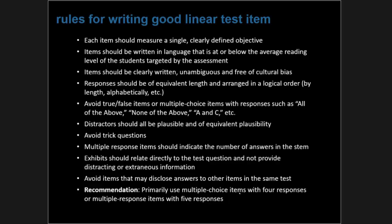Items should be clearly written, unambiguous, and free from cultural bias. Responses should be of equivalent length and arranged in some logical order — by length, alphabetically, or another form of logical order. A common mistake among inexperienced item writers is that the longest answer or the third answer (answer C) is always correct. Making responses equivalent in length and ordering them logically helps you avoid these common mistakes.